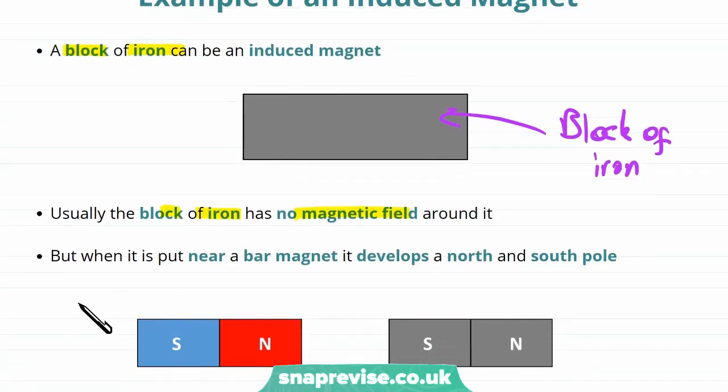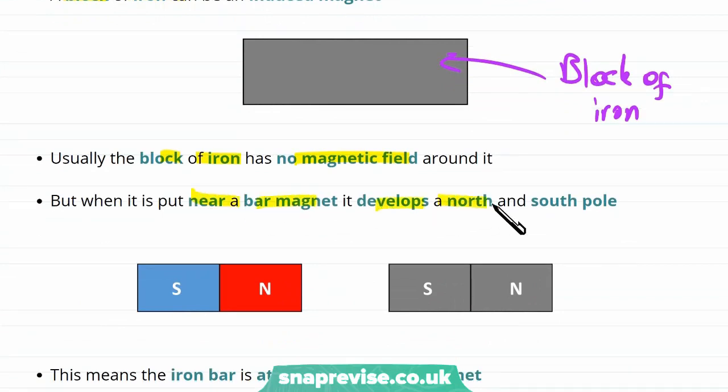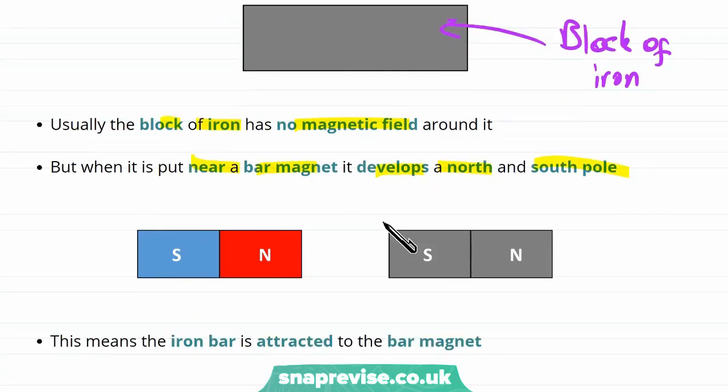But when it's put near a bar magnet, it develops a north and south pole. And something important that's worth noticing here is that the north and south pole that this block of iron has developed is going to cause the two magnets to be attracted to each other. So the induced magnet is never repelled from the magnet that creates it. It's always attracted.